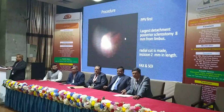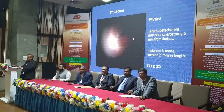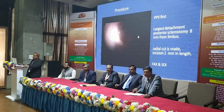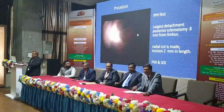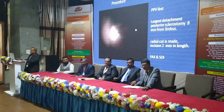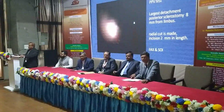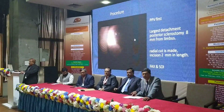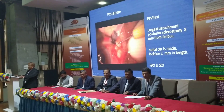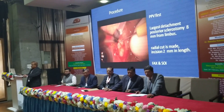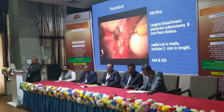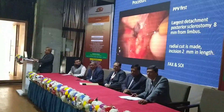After doing the parsplana vitrectomy, PFCL was introduced into the mid-vitreous cavity during the initial choroidal detachment drainage. We then identified the point of peak choroidal detachment, and a radial incision was made 8 mm from the limbus, followed by a puncture to drain the serous fluid.